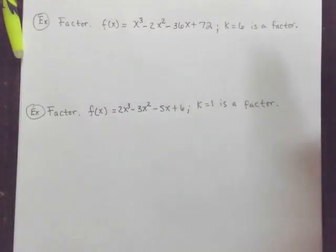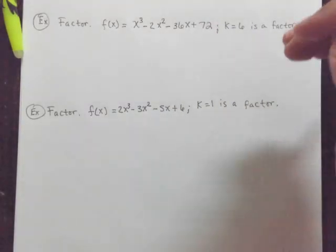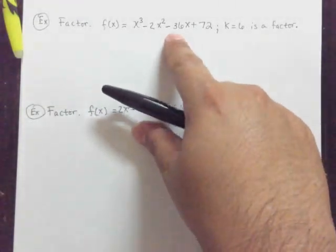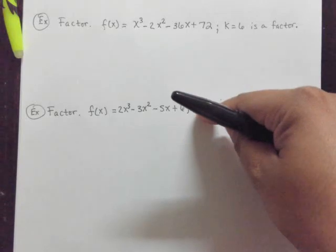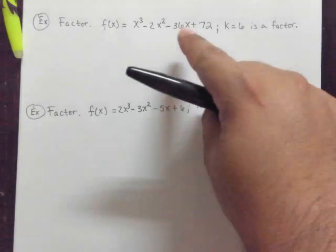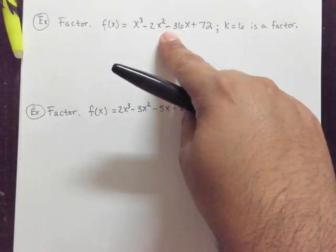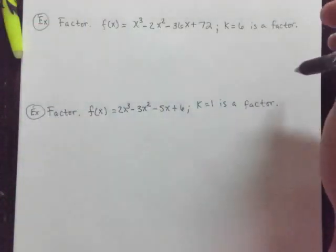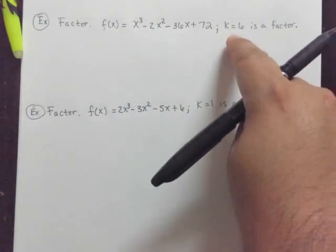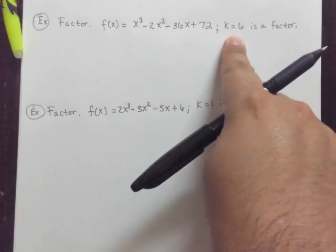We're given two polynomials here, two examples. We're given a polynomial function, and we're also given the fact that each of these are zeros, or they're factors of this polynomial. What they want us to do is to factor each of them into their linear factors. We already know that this is going to be a zero, that this is a factor.